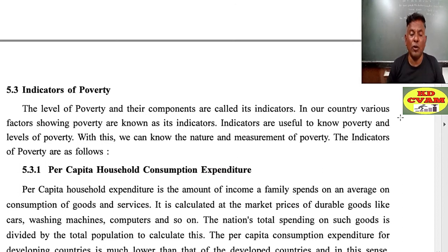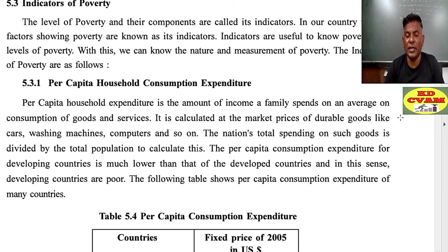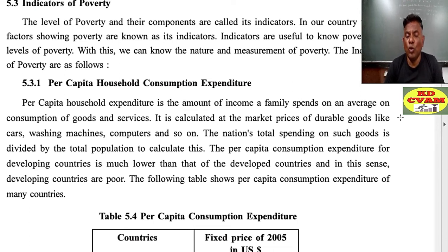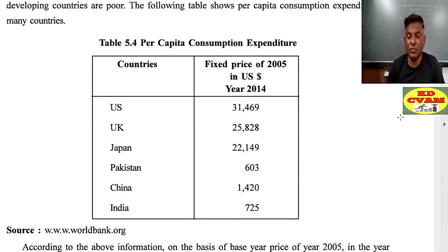Per capita household expenditure is the amount of income a family spends on average on consumption of goods and services. It is calculated at the market price of durable goods like cars, washing machines, computers, and so on. The nation's total spending on such goods is divided by the total population. The per capita consumption expenditure for developing countries is much lower than that of developed countries, and in this sense developing countries are poor.